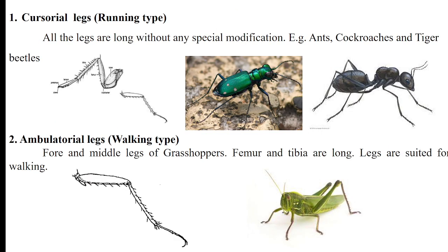The first type of legs are cursorial legs, modified for walking and running purposes. In ants, cockroaches and tiger beetles, these legs have no special modifications but are well-suited for running. You might have noticed ants running very fast — this is because of their cursorial legs.